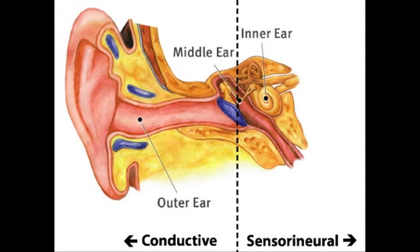Hearing loss can broadly be broken down into conductive and sensorineural hearing loss. Conductive hearing loss occurs when pathology is located in the external or middle ear, while sensorineural hearing loss is usually a manifestation of inner ear disease. On history, ask if the hearing loss is unilateral or bilateral, the onset, duration, progression, and frequency, accompanying vestibular symptoms, previous surgery to the ears, head or ear trauma, noise exposure, family history, ototoxic medications, systemic diseases, or signs of infection.